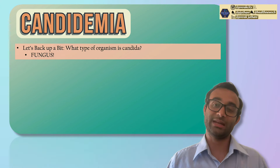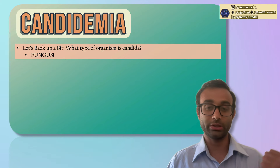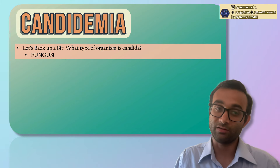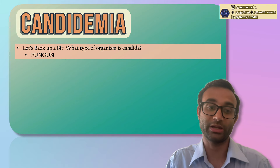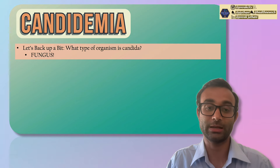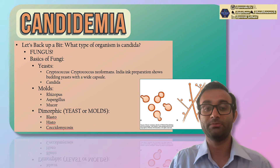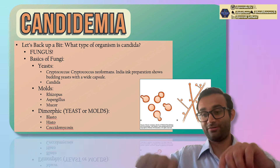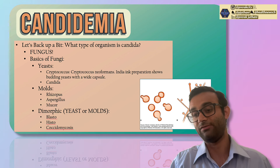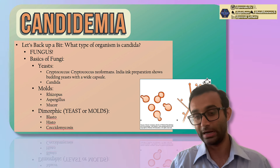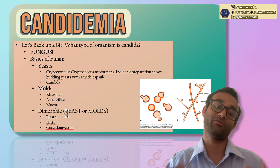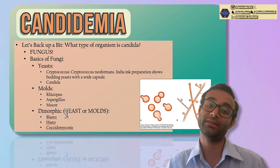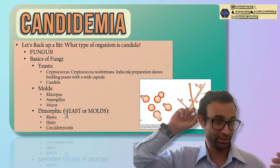What kind of organism is Candida? You can think about animals, you can think of plants, but there's also something called fungi. Candida is a type of fungus. There are very different types of fungi: specifically there's yeast, which are usually unicellular; there's molds, which usually have hyphae and microconidia; and sometimes you have dimorphic fungi, which is both yeast and molds — the environment determines which form they take.